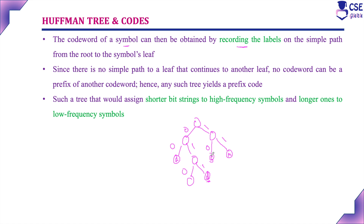This implements prefix-free codes. Since there is no path to a leaf that continues to another leaf, no codeword can be a prefix of another codeword. Such a tree is called the prefix codeword tree. In this case, we are able to assign shorter bit strings to high-frequency symbols and longer ones to low-frequency symbols — and this is exactly what we are going to implement in Huffman tree and Huffman codes.